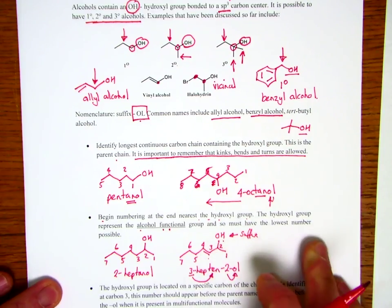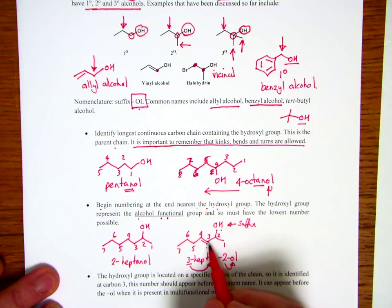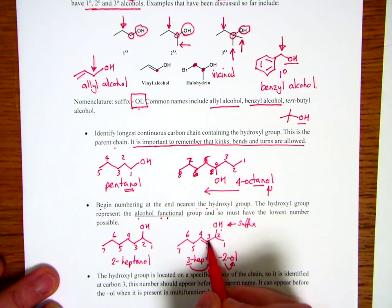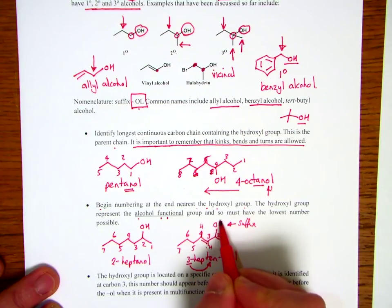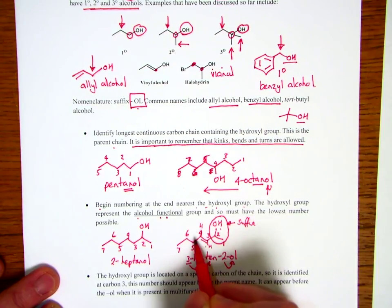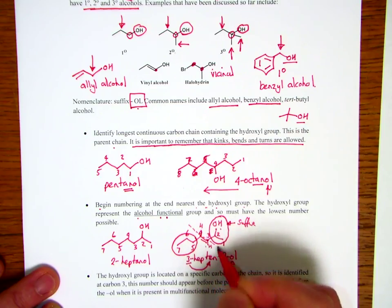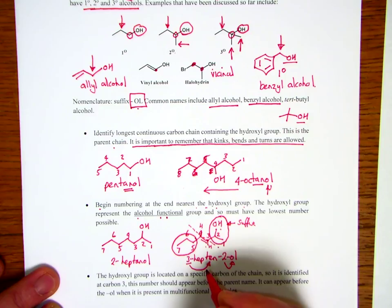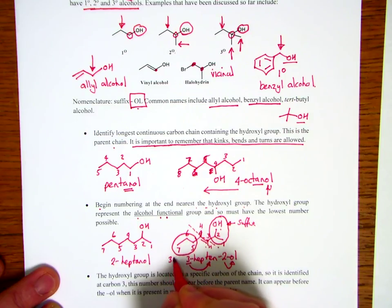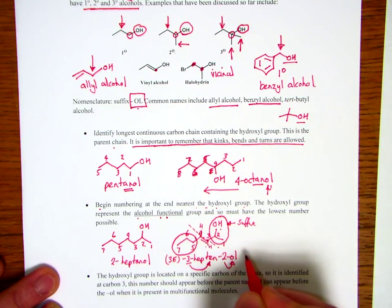Obviously, since it's a double bond, the next question I have to ask you is, is it E or Z? Well, we should recognize that there's a hydrogen attached here and a hydrogen attached here. So both high priority groups are on opposite sides of the double bond, making that an E stereoisomer. So this becomes (3E)-hept-3-en-2-ol.